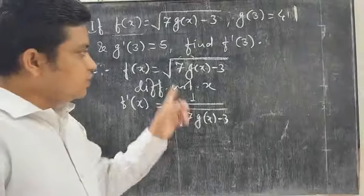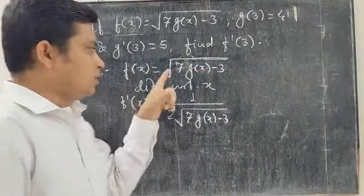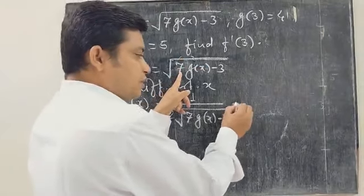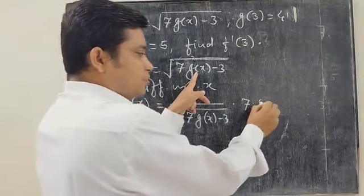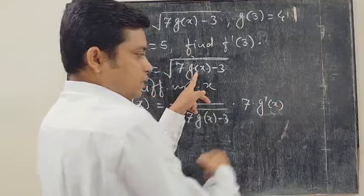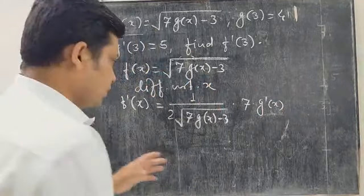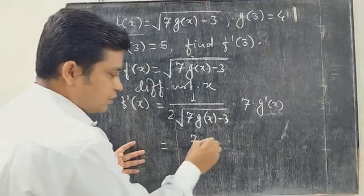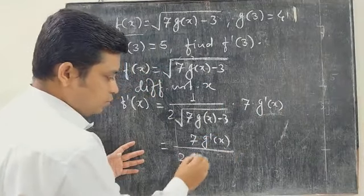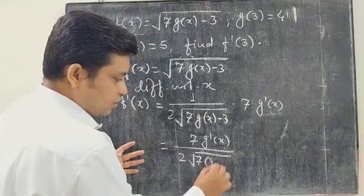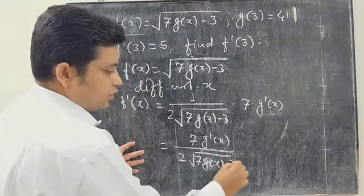The derivative of the inner function 7g(x) minus 3 gives us 7g dash of x, since the derivative of the constant 3 is 0. So f dash of x is equal to 7g dash of x divided by 2 under root of 7g(x) minus 3.